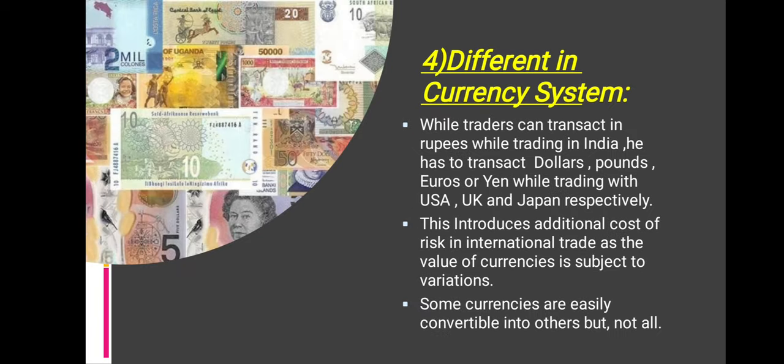The next point is difference in currency system. While a trader can transact in rupees while trading in India, he has to transact in dollars, pounds, euros, or yen while trading with the USA, UK, and Japan respectively. This introduces additional cost and risk in international trade as the value of currencies is subject to variation. Some currencies are easily convertible into others, but not all.